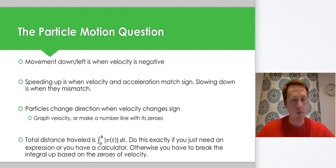Particles change direction - remember we get direction from velocity - when velocity changes sign. So we're going to do that one of two ways: if we have a graphing calculator we're going to graph velocity and see where it changes signs, see where it crosses the x-axis. If you have no graphing calculator, you're going to find the zeros of velocity and make a number line.